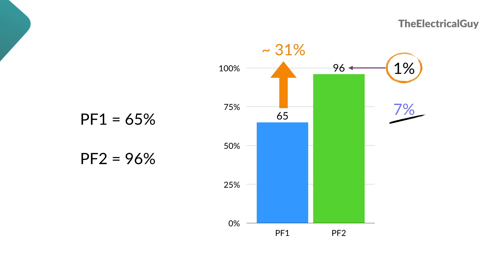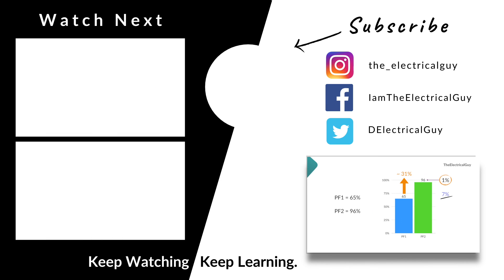I'll ask you to let me know — what rating of capacitor should be selected in order to get 99% power factor? Let me know the value of that capacitor in the comments. This is one simple example of how to solve power factor improvement problems, which are very common in different types of exams. If you're interested in more videos on such problems, let me know via comments. That's all for this video — keep watching, keep learning.